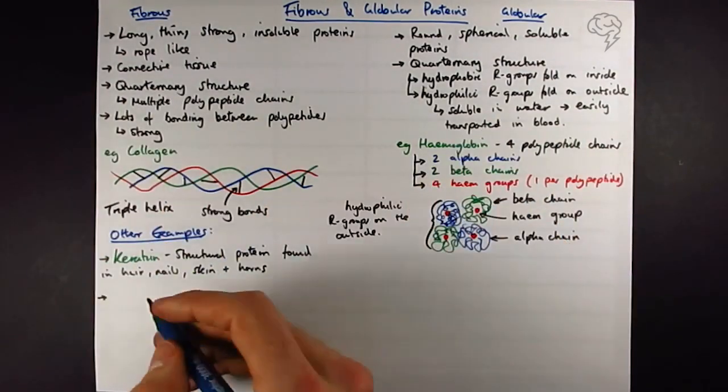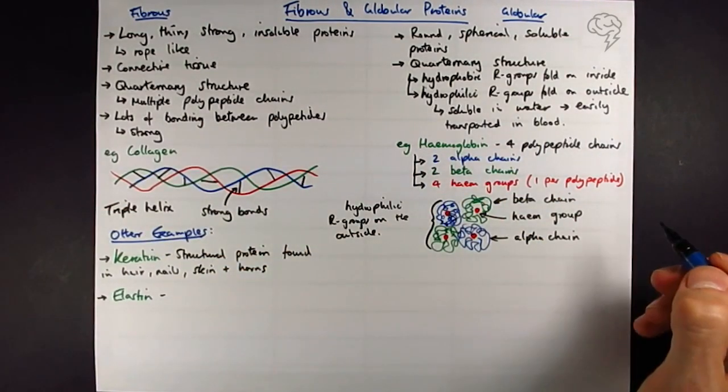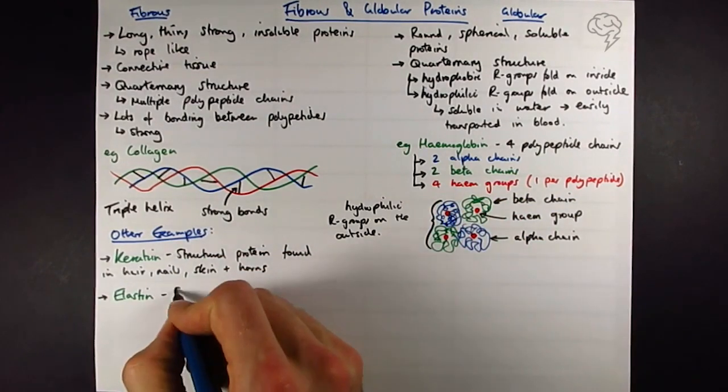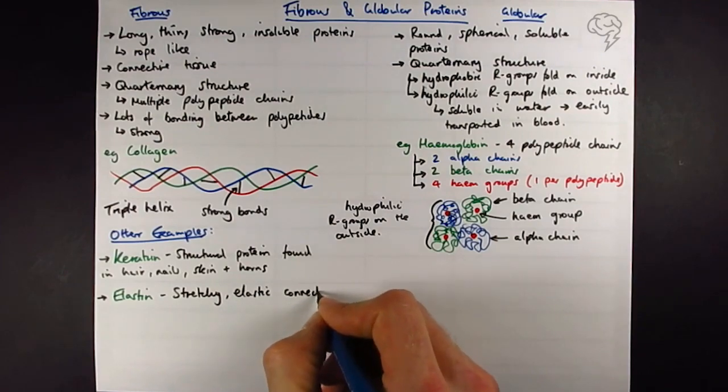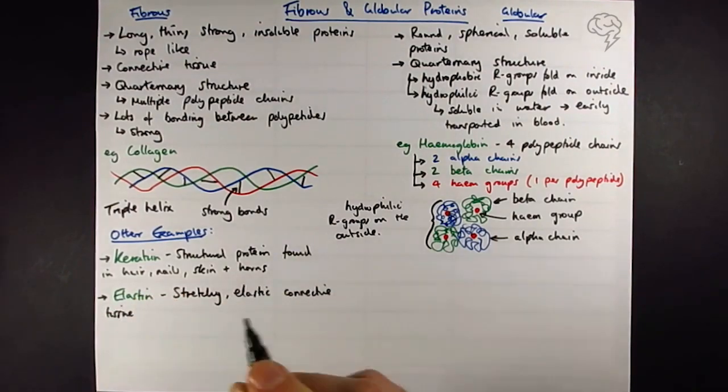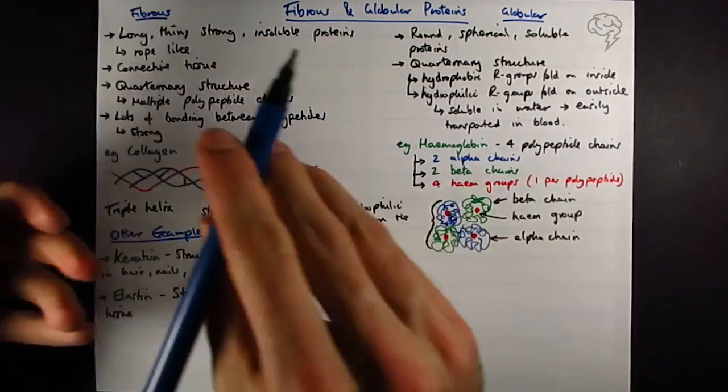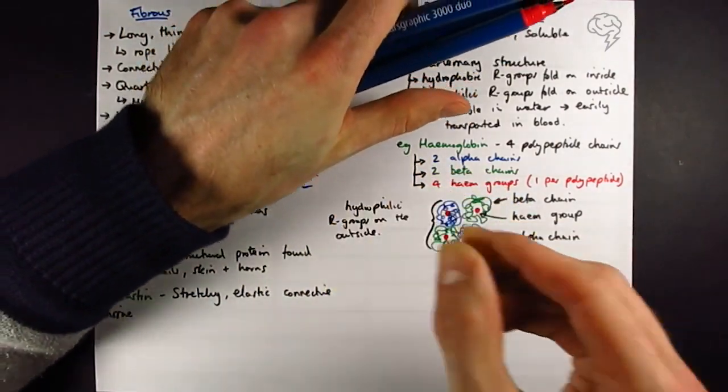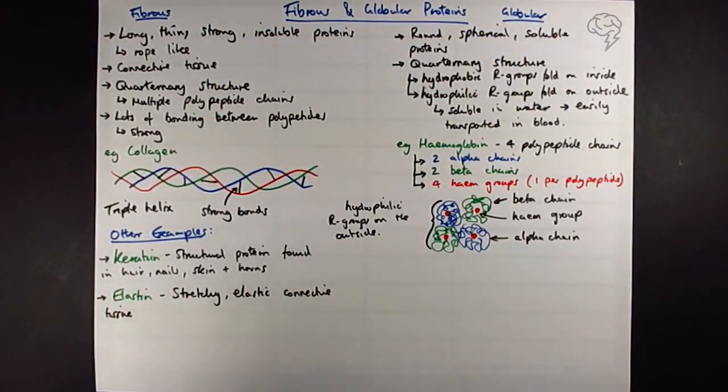Another example of a protein we need to know about is elastin. These all have a quaternary structure, they're all long and thin, they've all got lots of bonding between the polypeptide chains. As the name suggests, it's long, it's stretchy, it's flexible, it's elastic. The example here is whenever something has to return to its original shape. You deform it and it pings back, like that is elastin in the skin working. We could say alveoli.